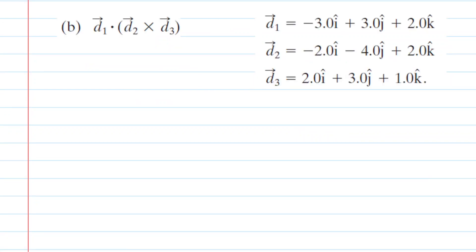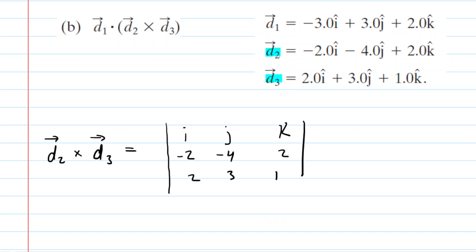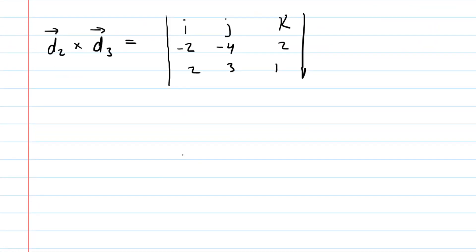Part B is going to be a little bit more entertaining because if we look carefully inside the parentheses — which is what we have to compute first — we have the so-called cross product. We're going to be setting up a cross product using vectors D2 and D3. We're going to set up what I like to call the cross product template.